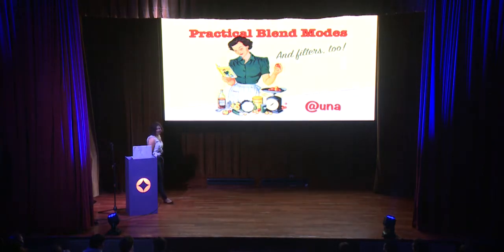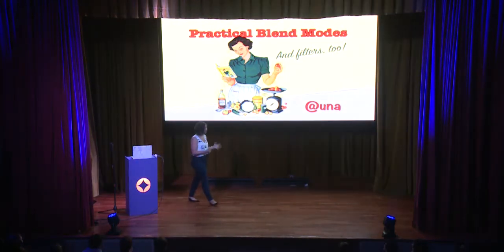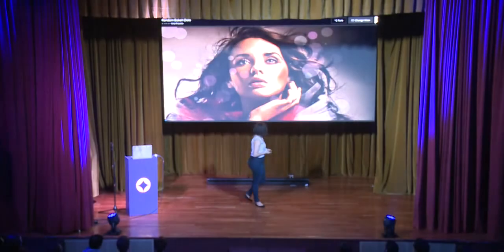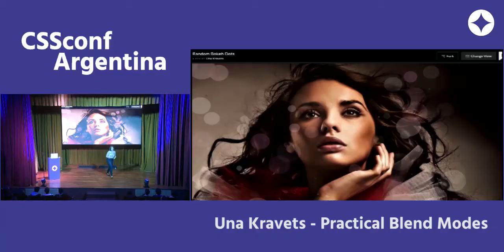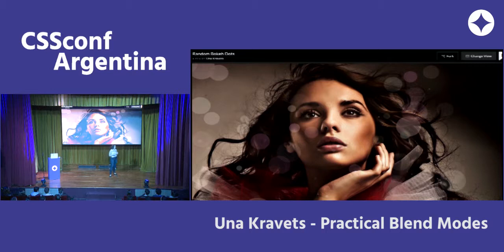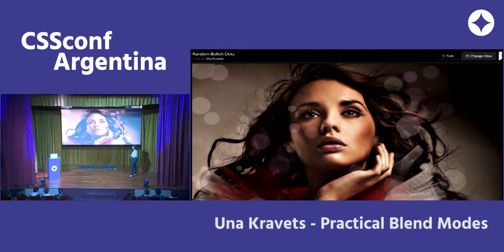Hello, thank you so much for having me. CSS is a really, really powerful tool. You can use it for art now. You can use it to do pixel manipulation. Here is an example of a CodePen where I'm generating random bokeh dots with the help of Sass random function. Every time you refresh, you get a sort of different aesthetic — generative art.